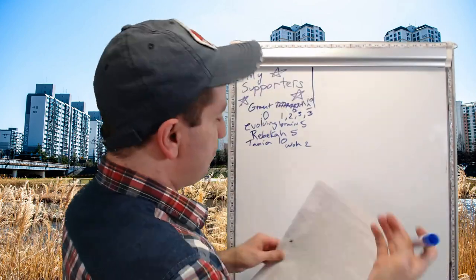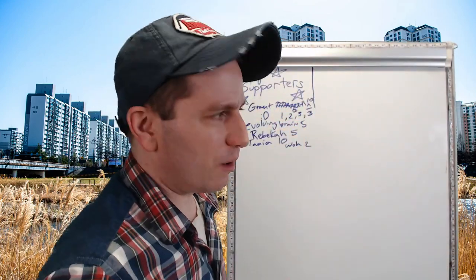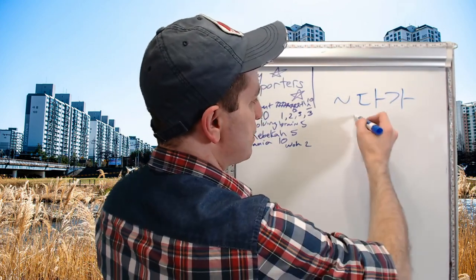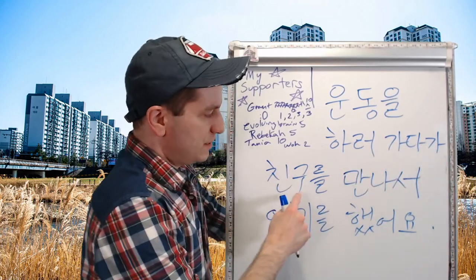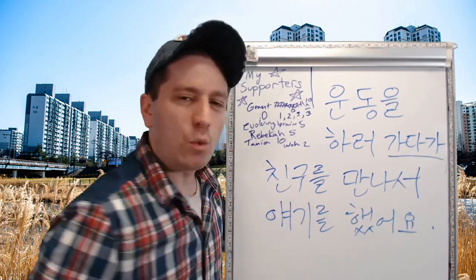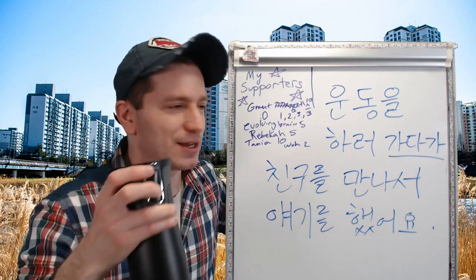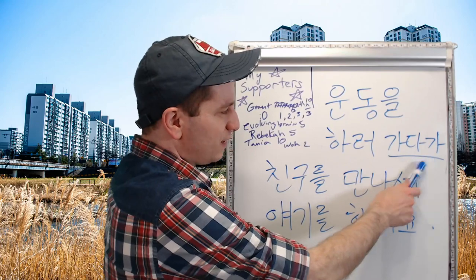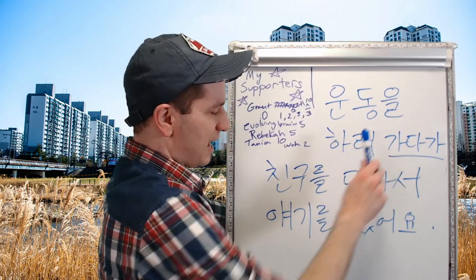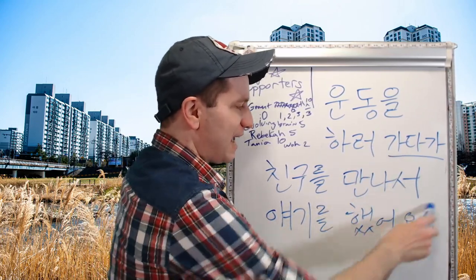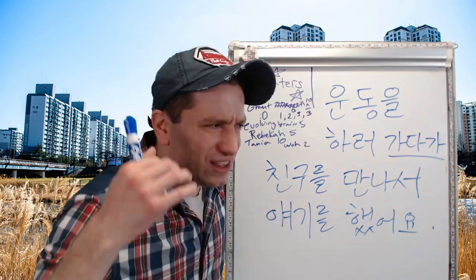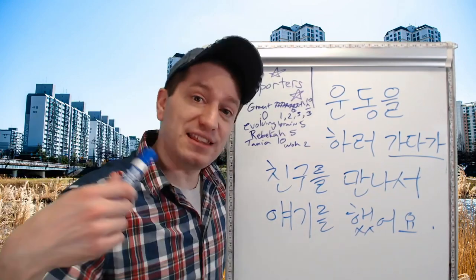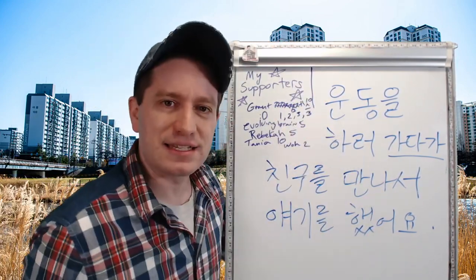You might have already noticed that sometimes this new form conjugates the exact same way as the regular 다가 form, which is used to say 'while.' 운동을 하러 가다가 친구를 만나서 얘기를 했어요 — which 가다가 is this? This one is 'while': while going to go exercise, I met my friend and we talked. There is no noun being carried from one location to another. Although conjugated the same way, it only means 'while' in this example — it'll always be clear from context.